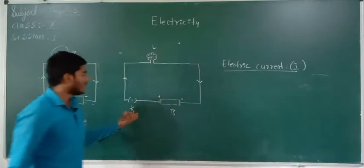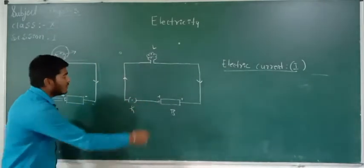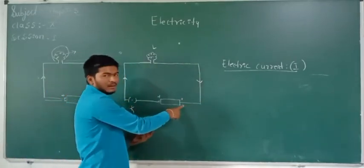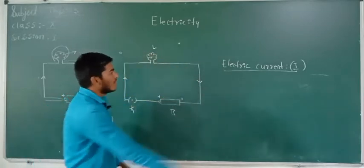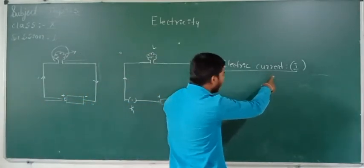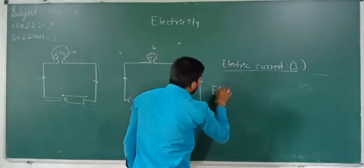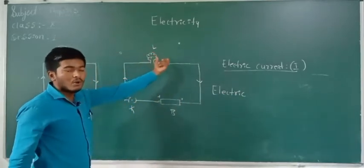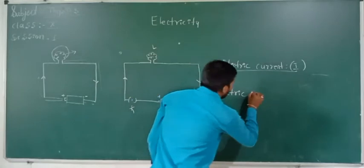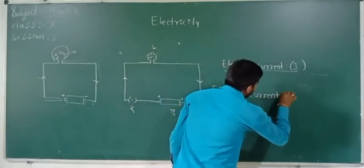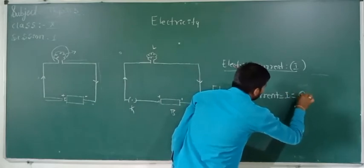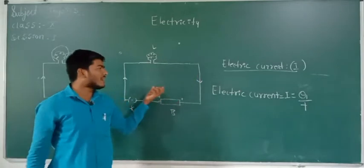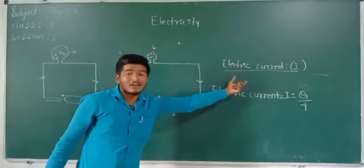Some amount of the charges will flow from the positive terminal of the battery towards the negative terminal. That flow of charges is called electric current. We have to find out how much electric current will be utilized by this bulb to glow, using the formula: electric current I is equal to Q by T.